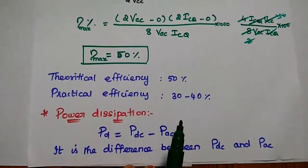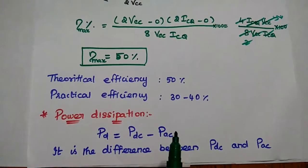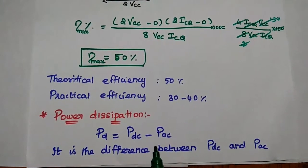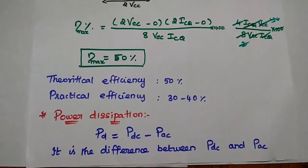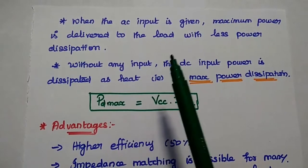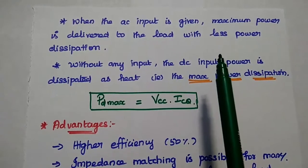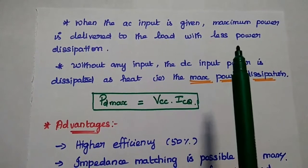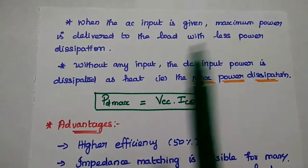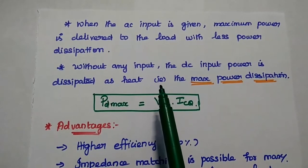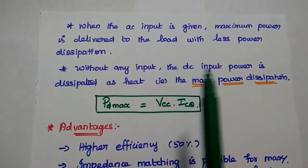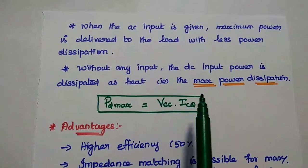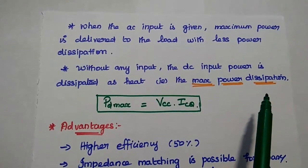Next, we are going to find out the power dissipation. Power dissipation is nothing but the difference between DC power and AC power. When the AC input signal is given to the circuit, maximum amount of power is delivered to the load with less power dissipation. Without any AC input, the DC supply power is dissipated in the form of heat — that is called maximum power dissipation.